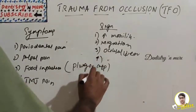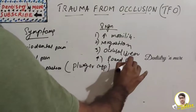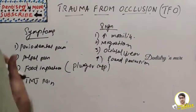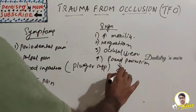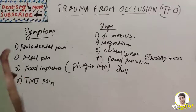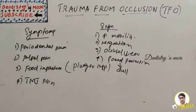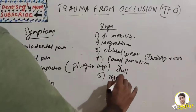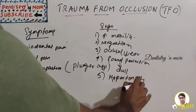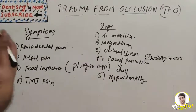Another sign is a change in percussion sound — affected teeth give a dull sound compared to the sharp sound of normal teeth. This difference is due to altered width and consistency of the periodontal membrane and partial resorption of the lamina dura. Hypertonicity of the masticatory muscle (bruxism) is also a sign, and makes the periodontium more susceptible to trauma.